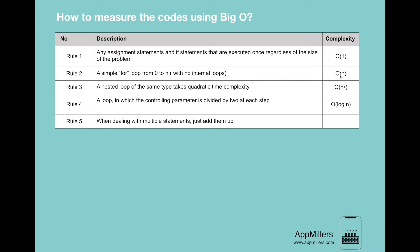Then the third rule is a nested loop of same type takes quadratic time complexity, which means that if we have any loop inside another loop, it will take quadratic time complexity, which is O(n²).